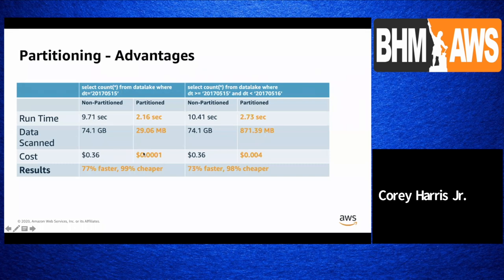This number — 36 cents — I can give you a quarter or some change. But when you're running this across an enterprise, this easily adds up and you'll easily get a knock on your door from your vice president. So definitely recommend understanding the partitioning paradigm. It really helps with the runtime as well as the cost. Compression as well — there are multiple different algorithms: gzip, bzip, snappy, et cetera, and there are different reasons to use either one.